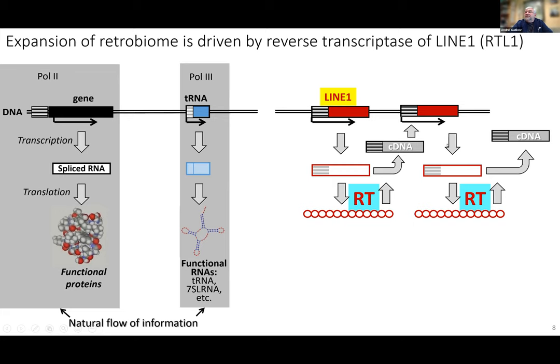About 150 of them are still intact and, if allowed, can generate reverse transcriptase and start the process of self-replication — making a cDNA copy of their own RNA and integrating it back, creating a daughter copy. This process is very well controlled. Most of these elements are under very severe epigenetic repression, but unfortunately this reverse transcriptase is quite promiscuous.